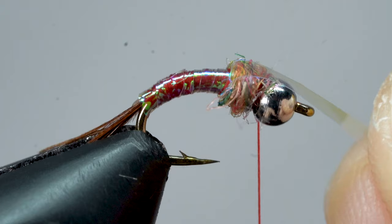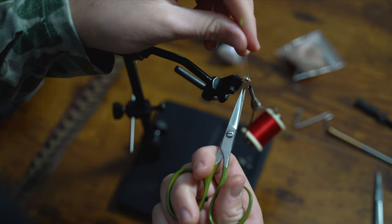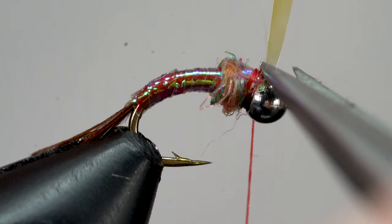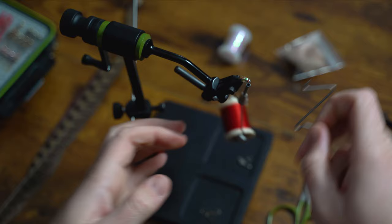Alright, now that we have our dubbing thorax, we're going to create a little wing case with our tinsel by folding it back over the top of the dubbing. And just like we did before, we're going to hold that tinsel in our right hand and go up and over with our left hand, locking that tinsel into place. Then we'll give it a few firm wraps and snip off the tinsel. Now we're going to give it a three to five turn whip finish.